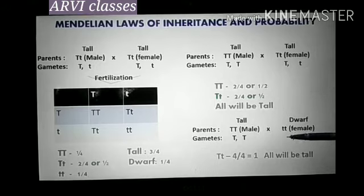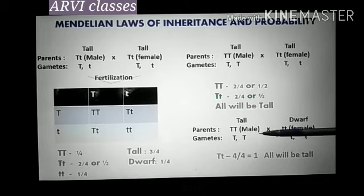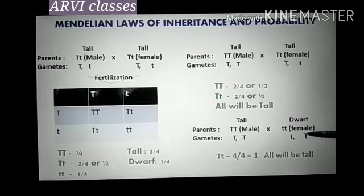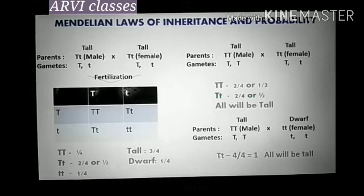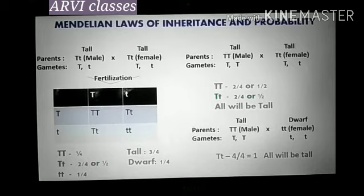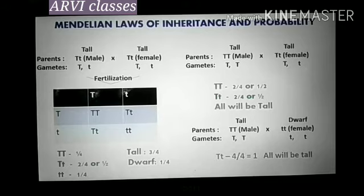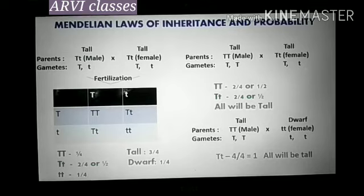In the third case, the cross takes place between homozygous tall and homozygous dwarf, and the probability of getting tall will be 1 — all will be tall. We will learn how these probabilities can be calculated without using the checkerboard in our next slide.